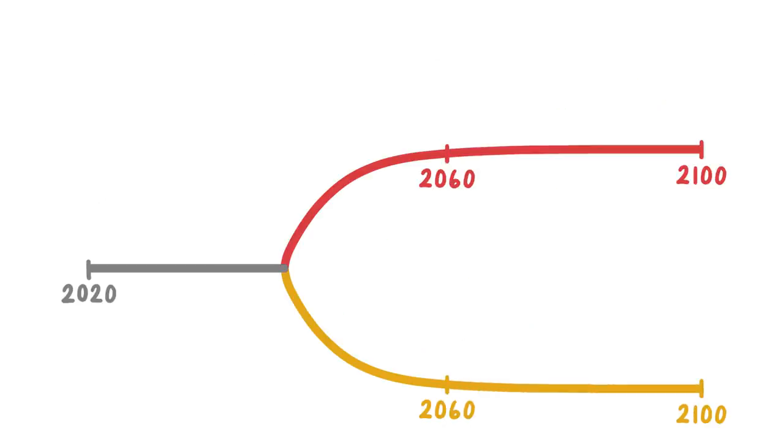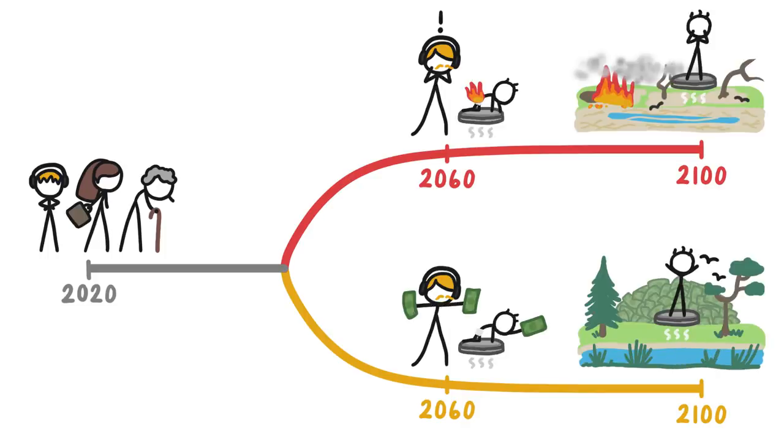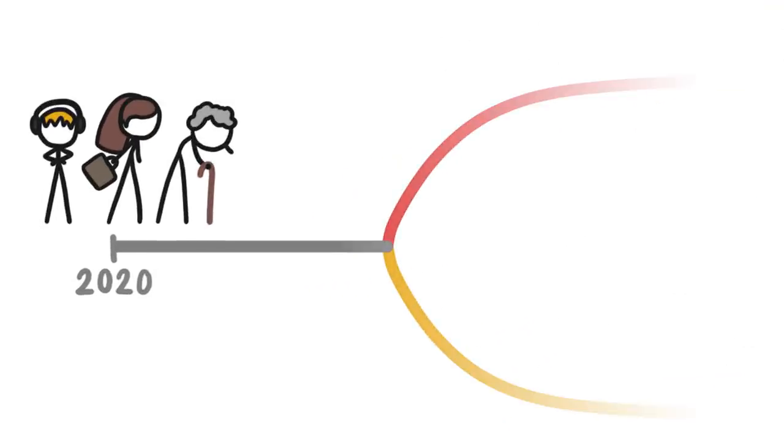Of course, no matter what path we take, not everyone alive today will be alive in 2060, let alone 2100. So it's people born in the future who will benefit the most from slowing climate change.